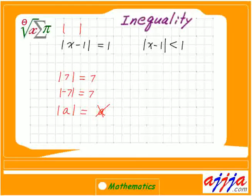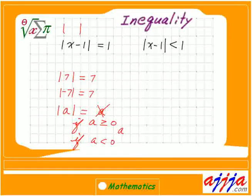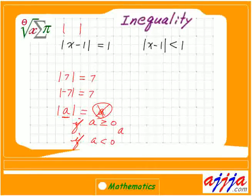Anytime you have variables inside of this sign, you have to treat this like two questions. If A is greater than or equal to 0, that's one case. Then if A is less than 0, that's the other case — two ifs. If the inside is positive, the answer is just A. But if A itself is negative, the absolute value sign means you take only positive, so you have to put a negative sign in front of it.